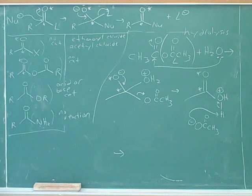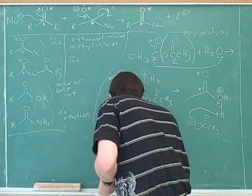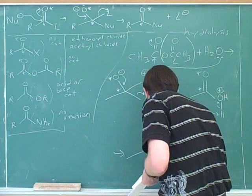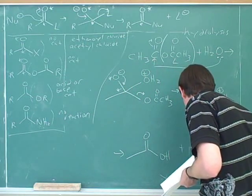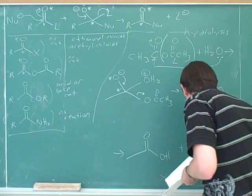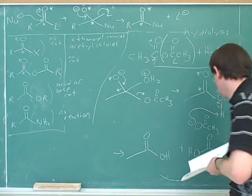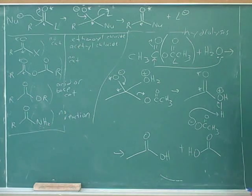So we've got two carboxylic acids out of this. That's right, that's a good thing to have noticed. That really didn't give you much trouble. What type of functional group did we start with here?